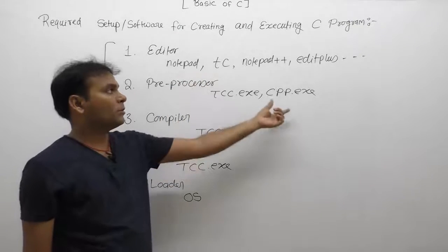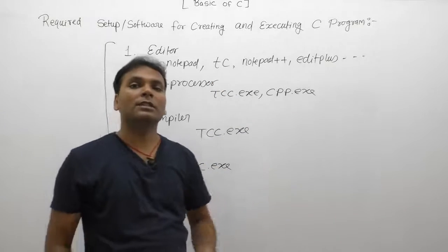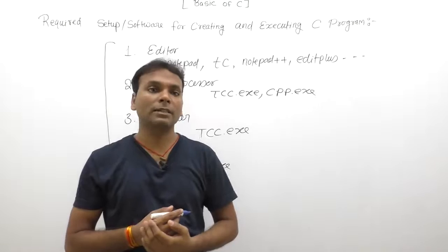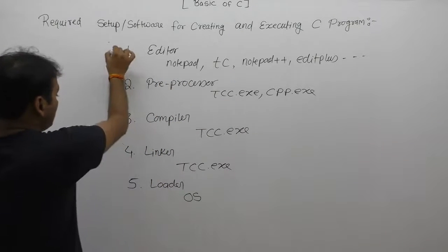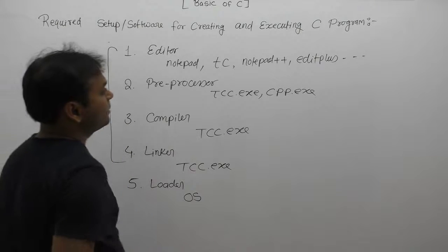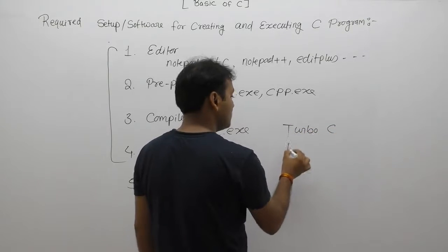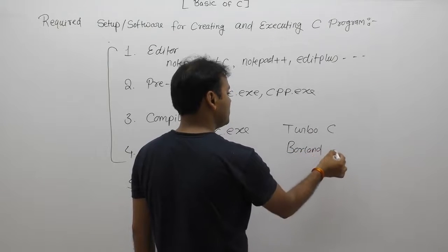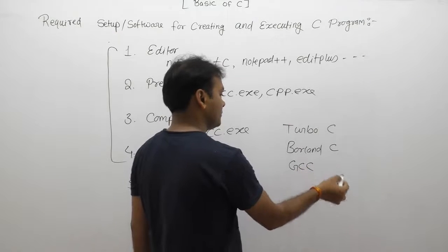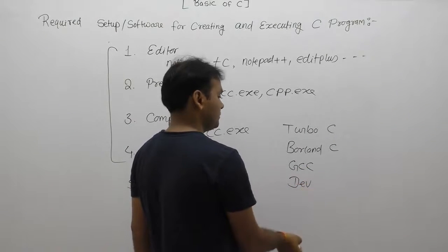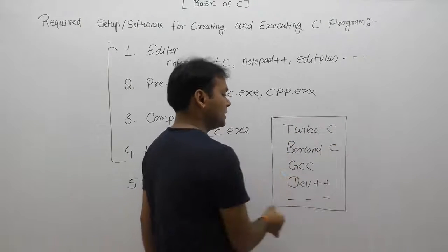Different C software tools are supplied in the form of exe files. For example, Notepad is found as notepad.exe and Turbo C is found as tc.exe. All softwares are supplied in the form of executable files. The first four tools — editor, preprocessor, compiler, and linker — are supplied by compiler packages like Turbo C, Borland C, GCC, or Dev C++. Many such compiler softwares are available in the market for creating C programs.